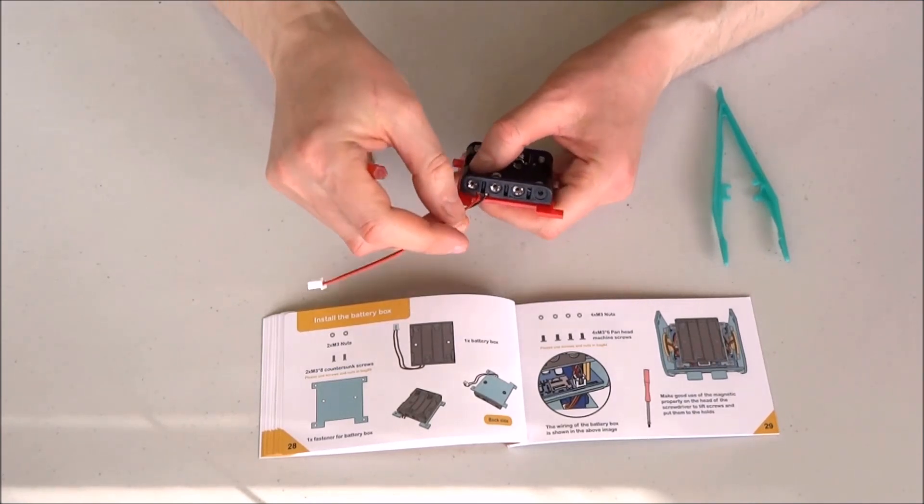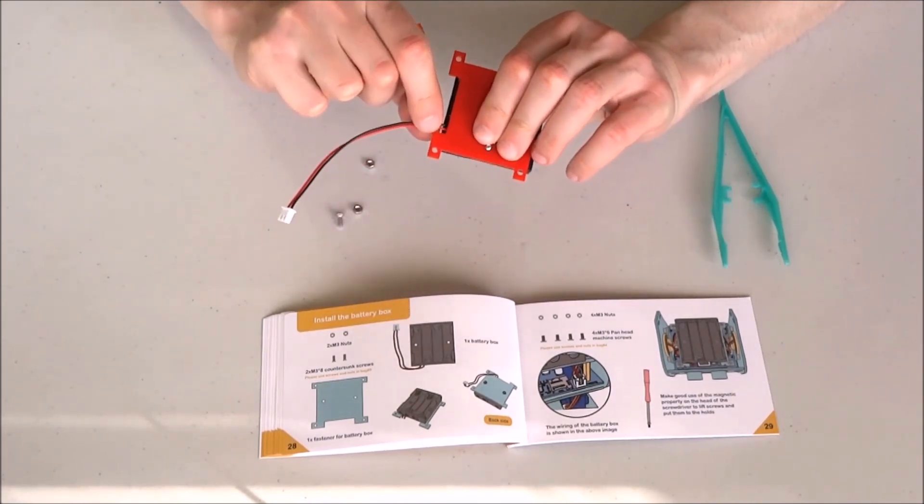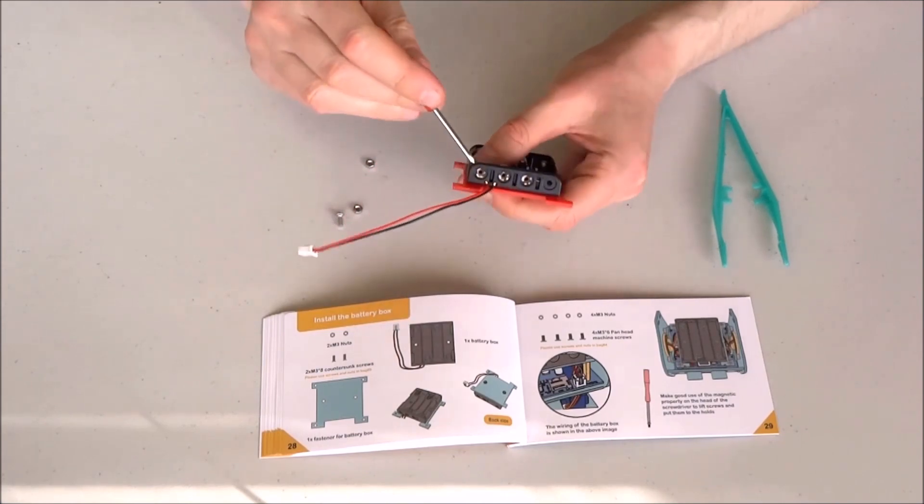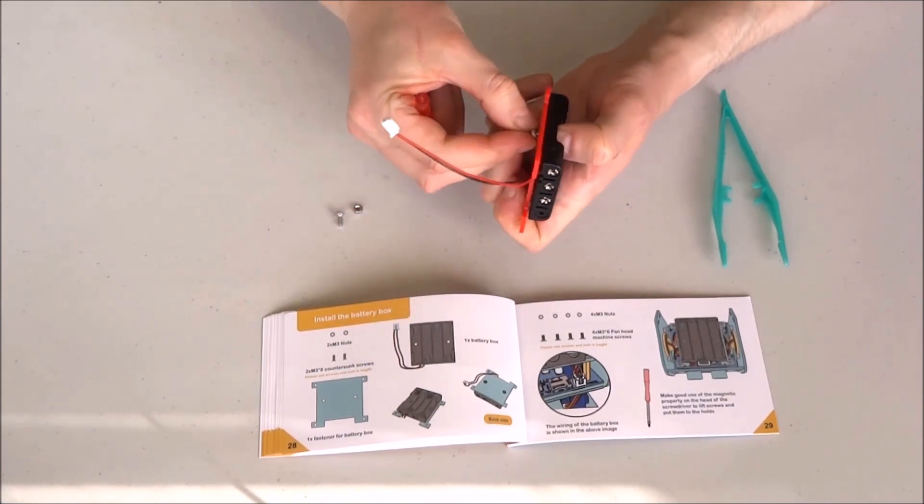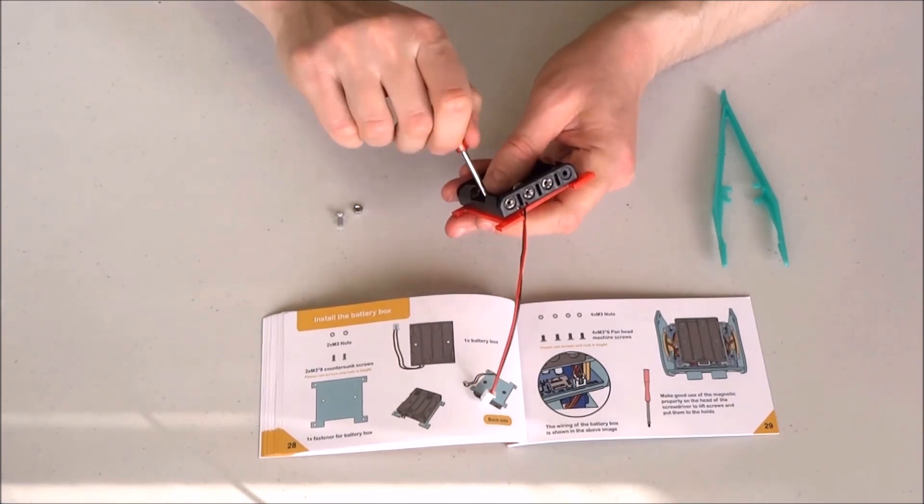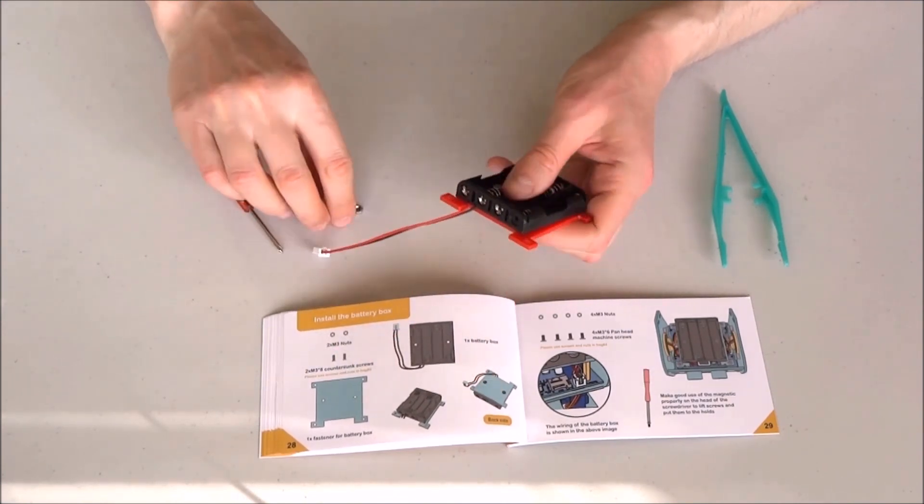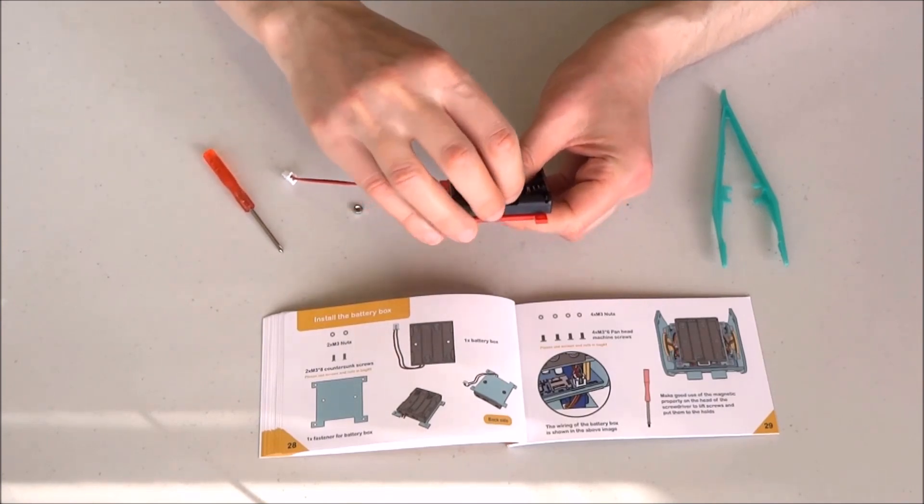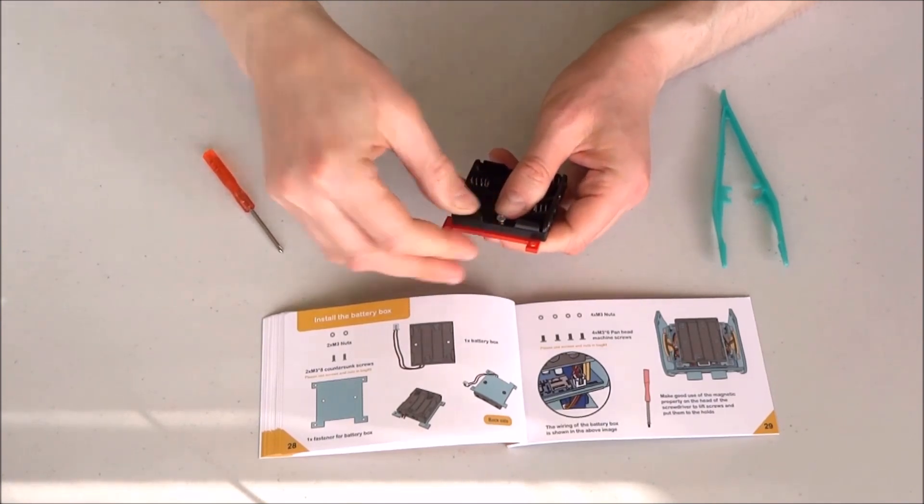Insert the bolt making sure that the cable goes toward this cut area here. Do not rush to tighten yet. Repeat the same with the bolt on the other end.